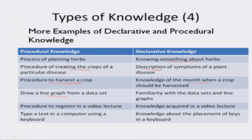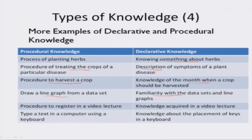Drawing a line from a data set involves actions such as plotting the data points onto a graph and joining the points with a line — a sequence of actions, so it is procedural knowledge. But familiarity with data sets and line graphs is a collection of facts and hence is declarative. The procedure to register in a video lecture is procedural, but the knowledge acquired in a video lecture is declarative. Typing text on a computer keyboard involves a sequence of typing actions and is procedural, but knowledge about the placement of keys on a keyboard is declarative.